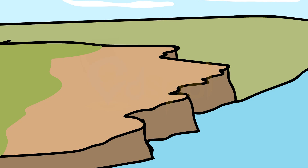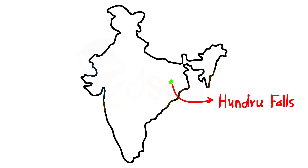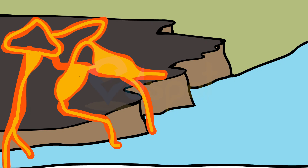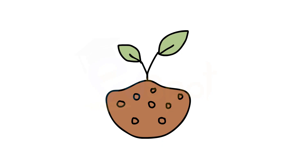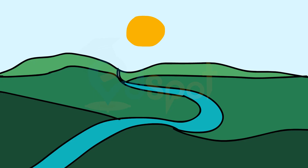In India, huge reserves of iron, coal, and manganese are found in the Chota Nagpur Plateau. In plateau areas there may be several waterfalls as the river falls from a great height. In India, the Hundru Falls in the Chota Nagpur Plateau on the river Subarnarekha, and the Jog Falls in Karnataka are examples of such waterfalls. The lava plateaus are rich in black soil that is fertile and good for cultivation. Many plateaus have scenic spots and are of great attraction to tourists.